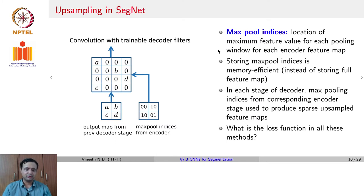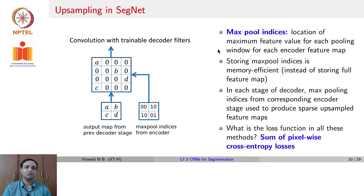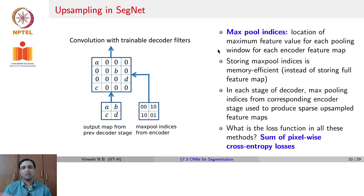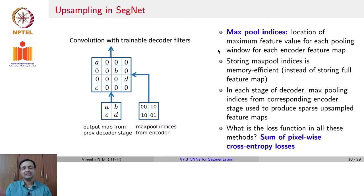What loss function would one use to train FCN and SegNet? It is the sum of pixel-wise cross-entropy losses. In both FCN and SegNet, the output is a volume the same spatial size as the input, but the number of channels equals the number of classes plus one for background. For each pixel, you have a vector of probabilities in that output volume. You compute the pixel-level cross-entropy for each pixel, sum all of them up, and that becomes your loss function — which remains differentiable as a sum of cross-entropies.